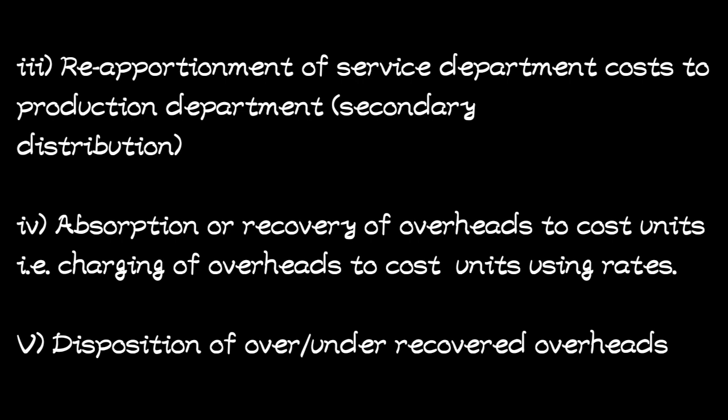After collection and allotment, the third step is reapportionment of service department costs to the production department — that is secondary distribution. The fourth step is absorption or recovery of overheads to cost units, for example the charging of overheads to cost units using the rates. Lastly, the fifth step is the disposition of over or under recovered overheads.